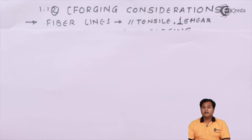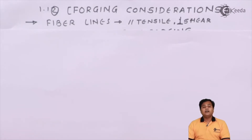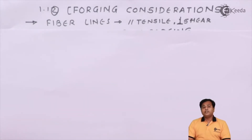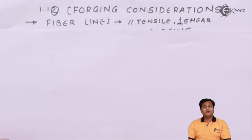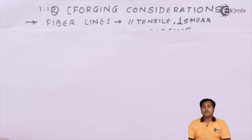Fiber lines are crucial. We must consider that the fiber lines are parallel with the tensile stresses or the normal stresses — whether it be compression or tensile stresses, they should be parallel with the fiber lines. Either you make the fiber lines form in such a manner that they will be aligned with the application of tensile and compressive stresses, or you apply the forces and loads such that the stresses will be applied along the fiber lines.